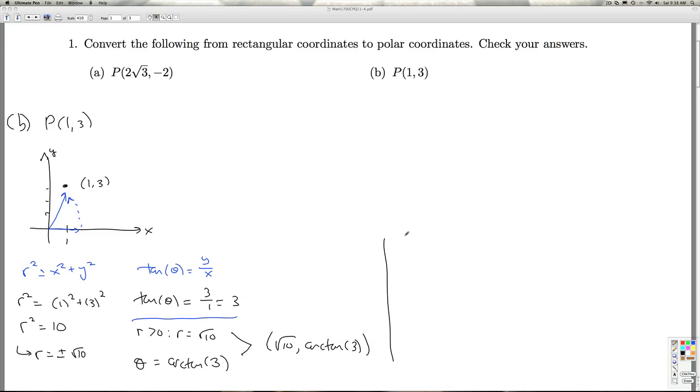If I want to pick the negative r value, then that would be r is negative radical 10. Then I have to rotate from the negative x-axis, so I'd have to go out this way. Then I could rotate pi,